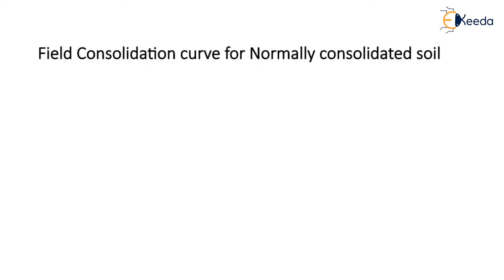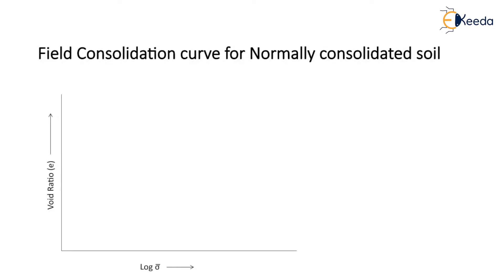First we will discuss the field consolidation curve for normally consolidated soil. In this graph, void ratio E is plotted as the ordinate and log sigma bar is plotted as the abscissa. Once we conduct laboratory testing on the sample, curve ABC is obtained. This curve is represented as Ku and is called the laboratory curve.